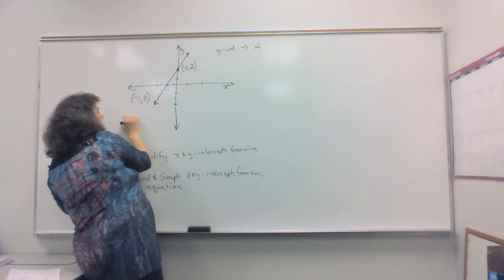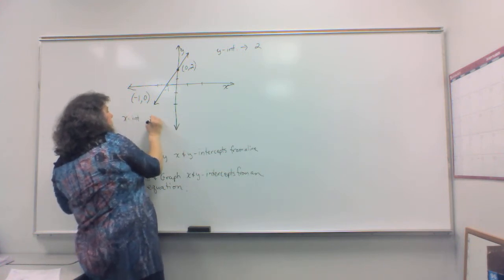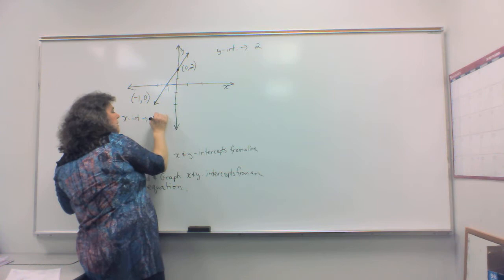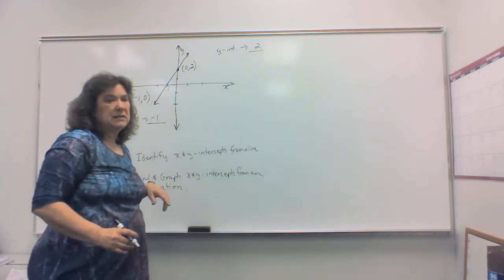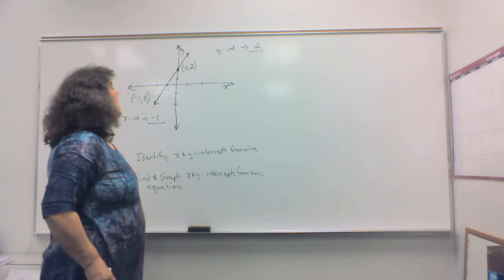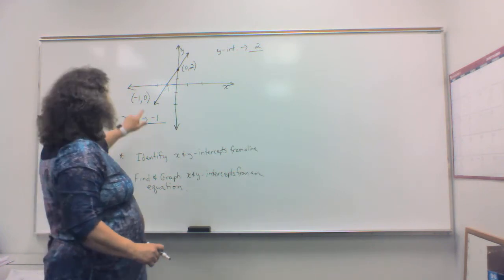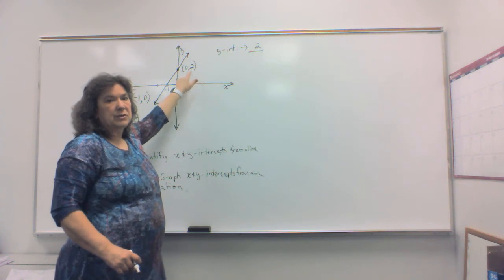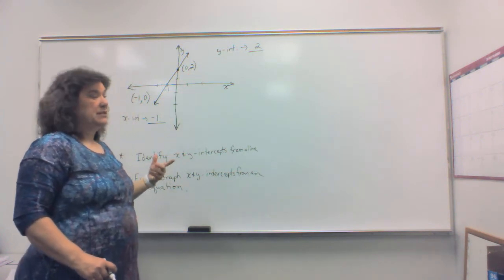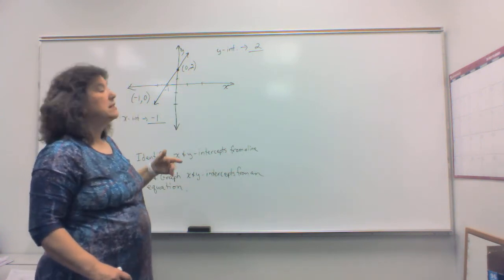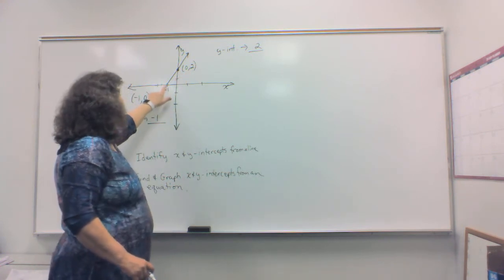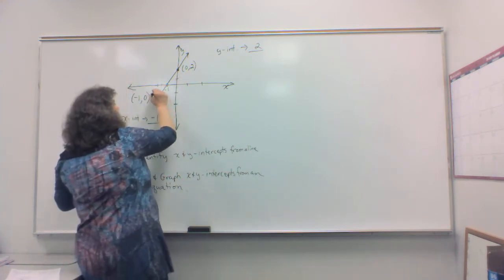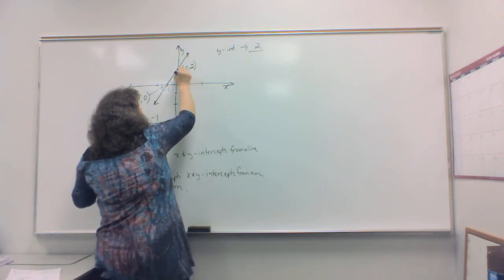So again, in your online system, your y-intercept will be 2 in this case. And again, your x-intercept will be negative 1. So that's the way it's done in your online system. But if you were doing this by hand on a piece of paper, we would want to see the ordered pair. So you need to understand the difference of what they're asking in the online system and what you would normally do to identify this x-intercept and my y-intercept.